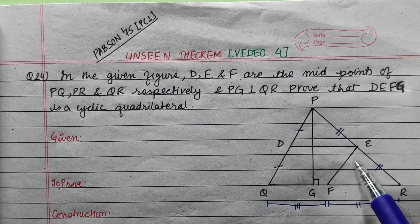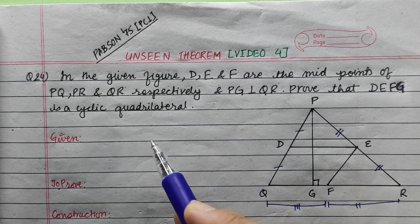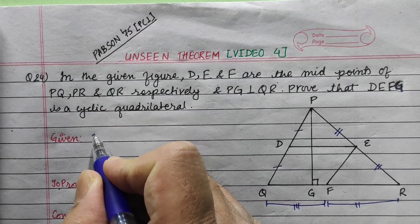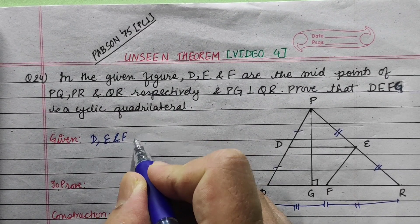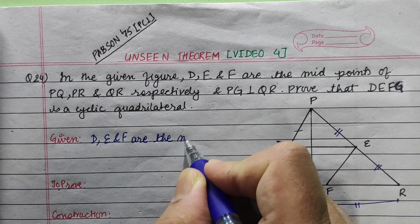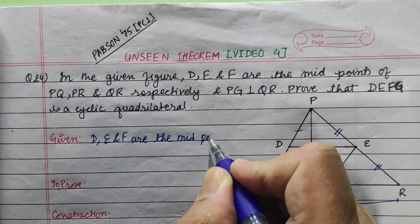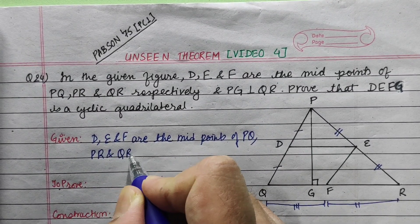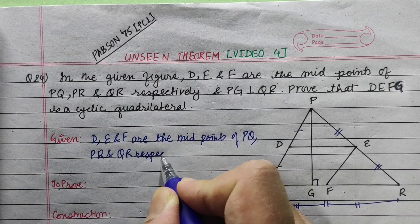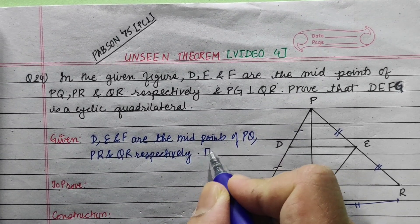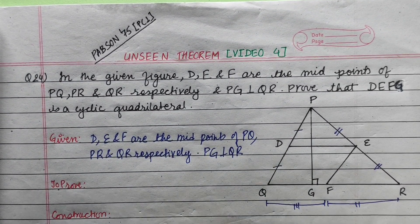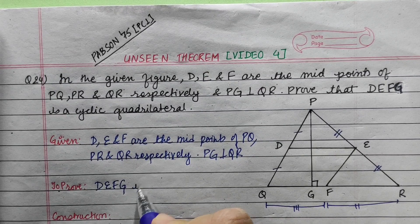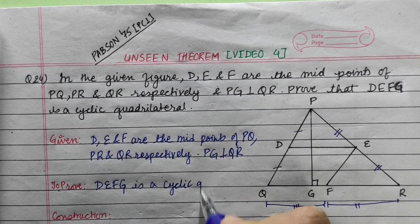Given: D, E, and F are the midpoints of PQ, PR, and QR respectively. PG is perpendicular to QR. To prove: DEFG is a cyclic quadrilateral.